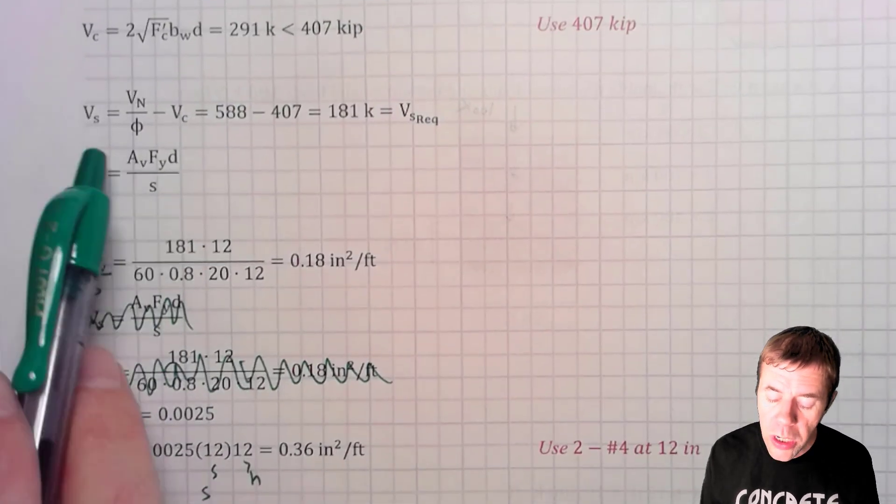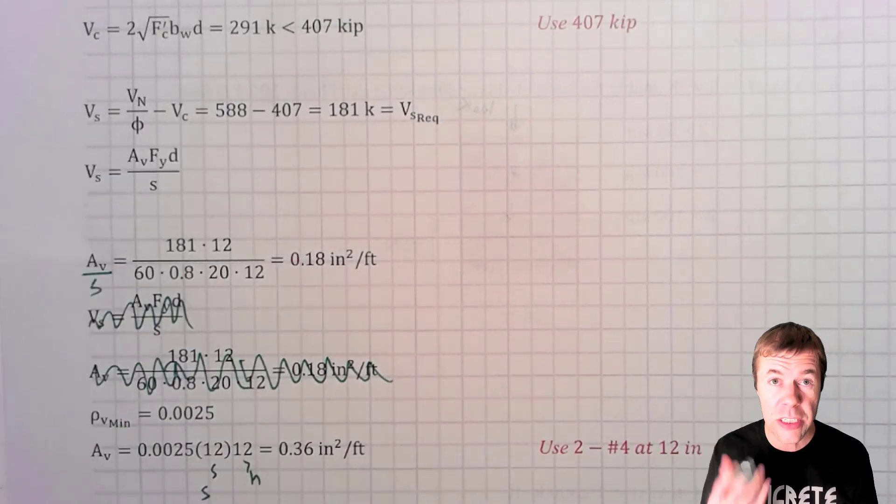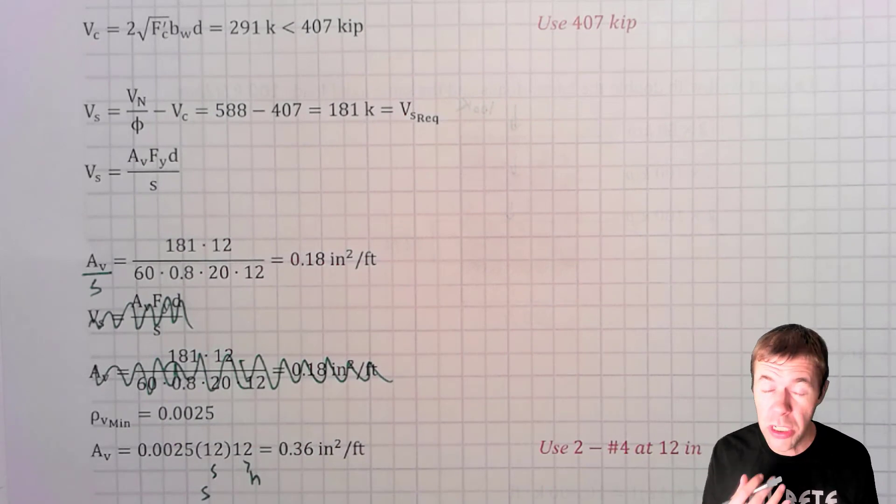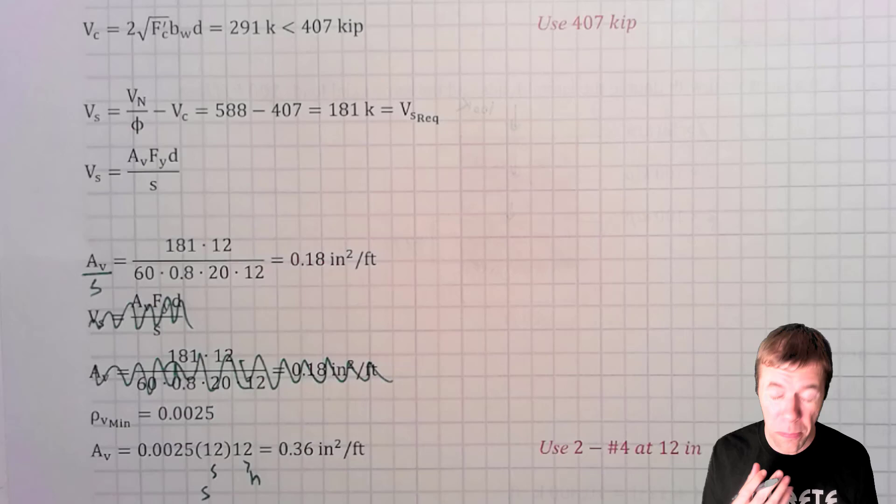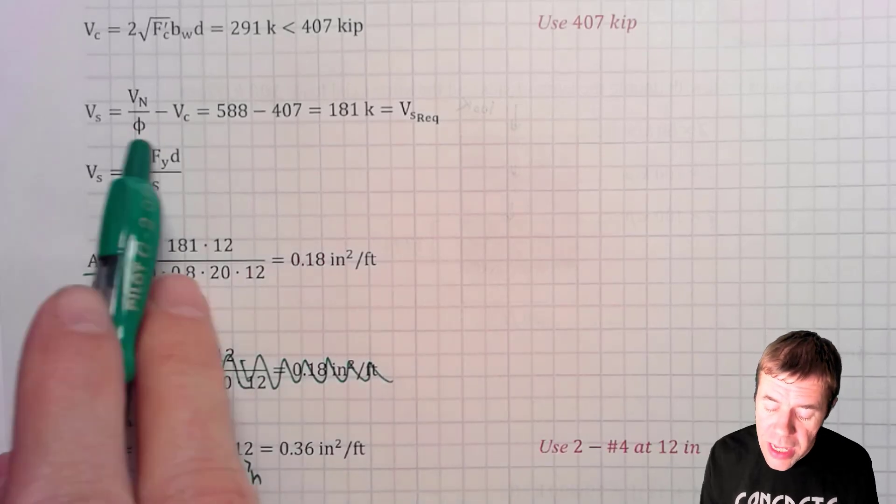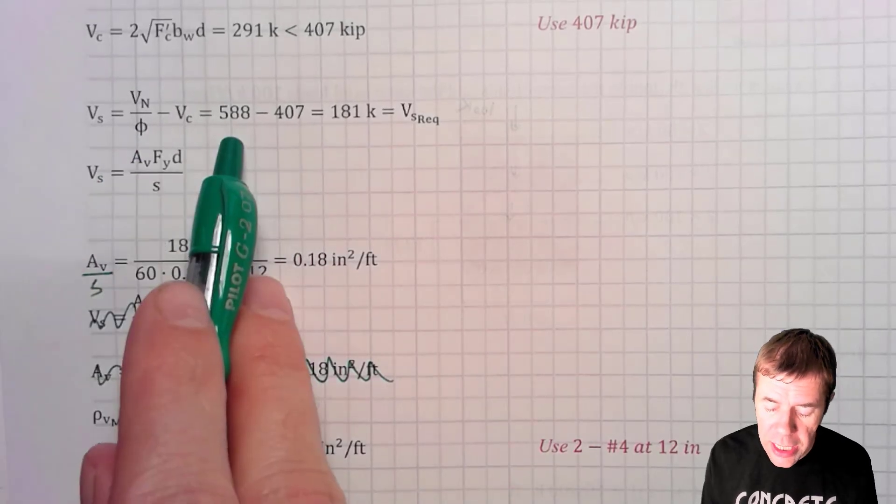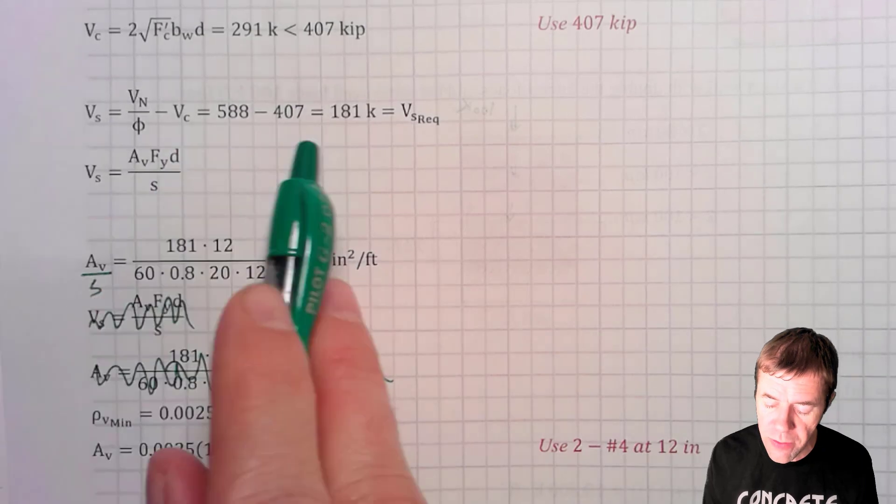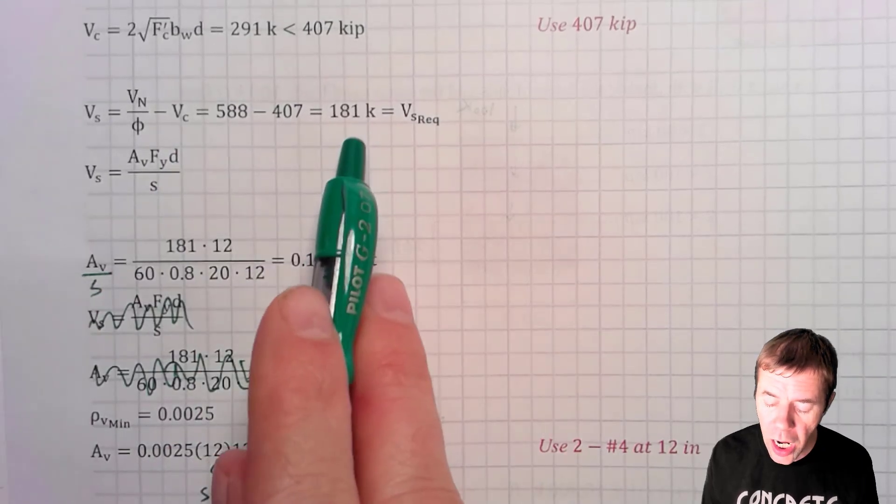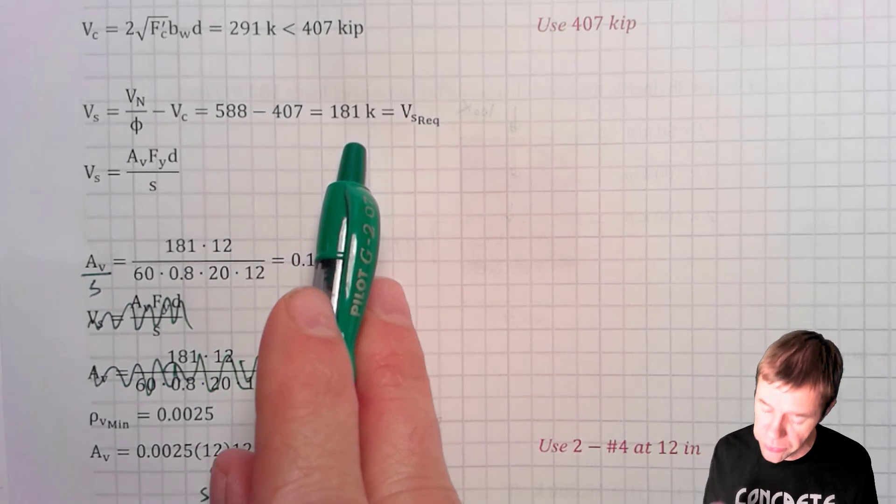Next we have to figure out what our steel, our shear capacity of our steel needs to be. This is just like you would a beam in case C or B. So we're going to say Vn over phi. That's that 588 kips minus our Vc, which is 407, means that we need 181 kips of shear capacity.